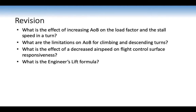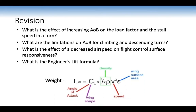The engineer's lift formula is: weight equals lift, which equals coefficient of lift times half rho V-squared times S. This is important because we'll look at the factors in terms of our stall speed and how increasing or decreasing each of these factors changes lift, which will in turn increase our stall speed.